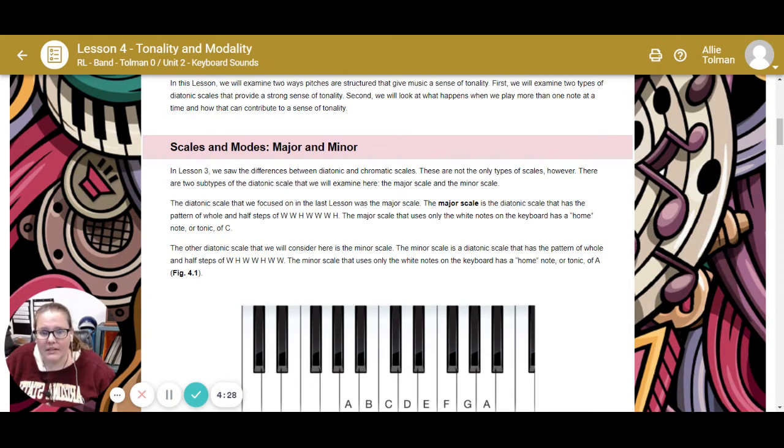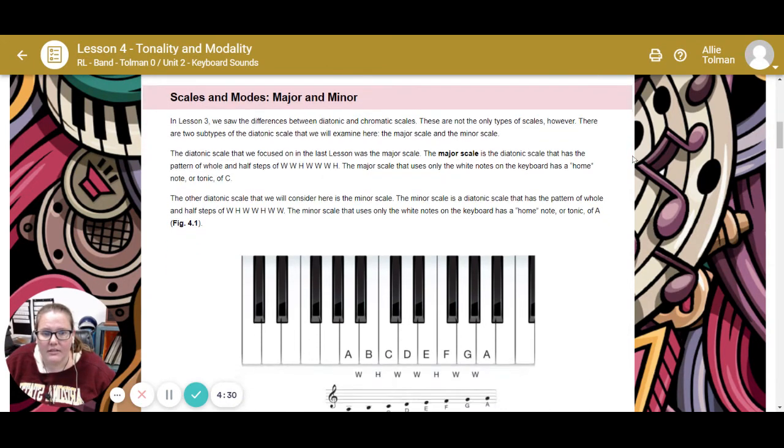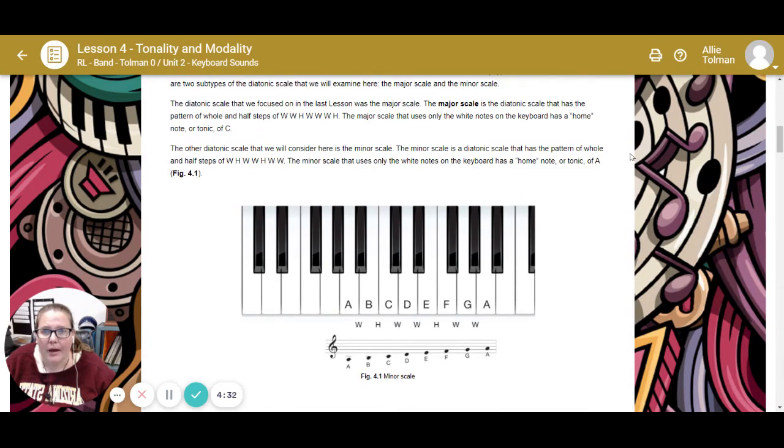The other diatonic scale is the minor scale. The minor scale is a diatonic scale that has the pattern of whole steps and half steps: whole, half, whole, whole, half, whole, whole. The minor scale that uses only the white notes on the keyboard has a home note or tonic of A. Minor.